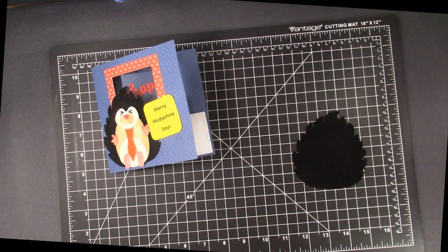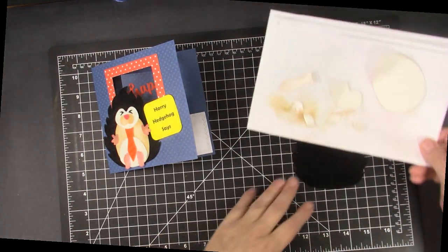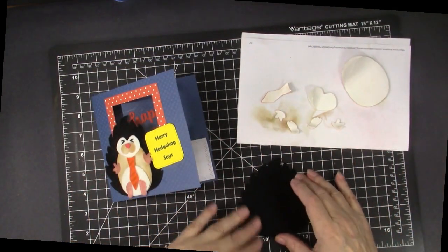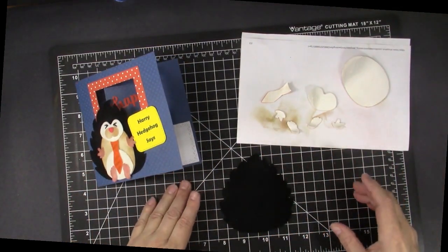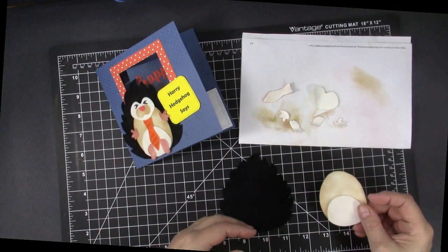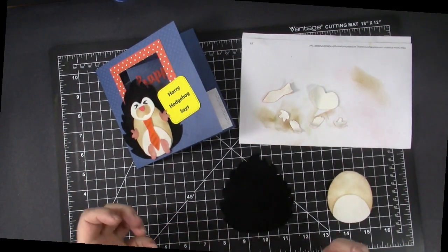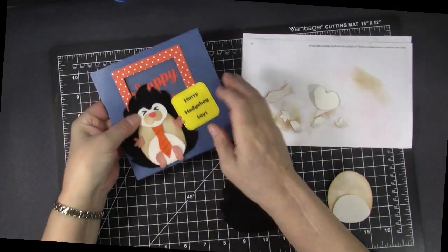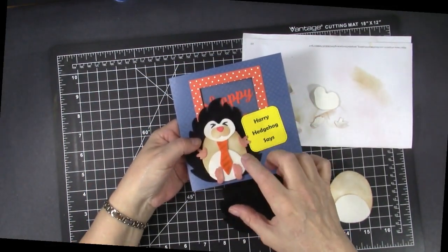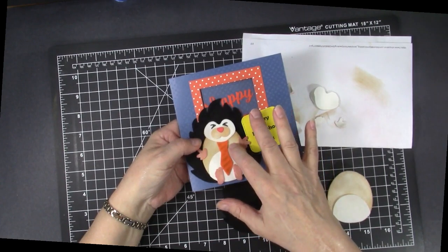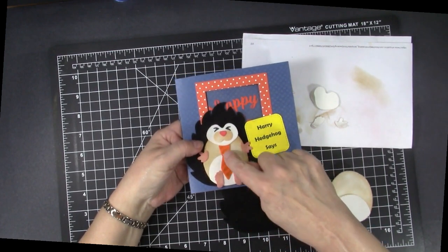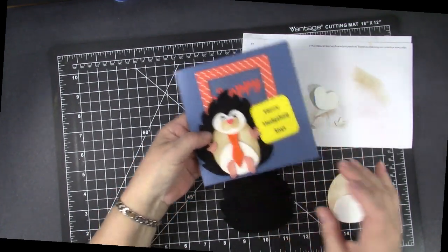Now I have die cut all the pieces for Harry Hedgehog in advance and done that so now I'm going to put them together. So as you can see there, as I showed you, there's different colors and I use the white a lot and what I do is then I'll use an ink to sponge it to get the colors that I need. There isn't like a tan and there isn't like a pinky tan so I sponge those with ink and on the tie I also added some stripes.